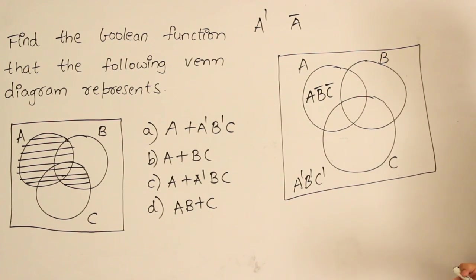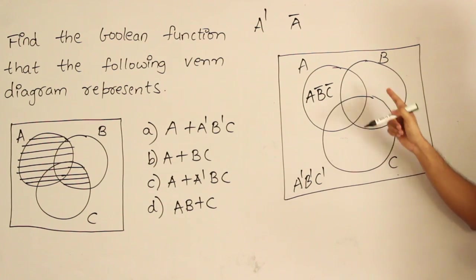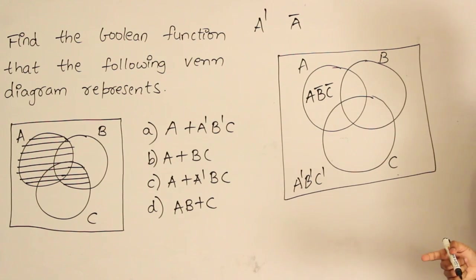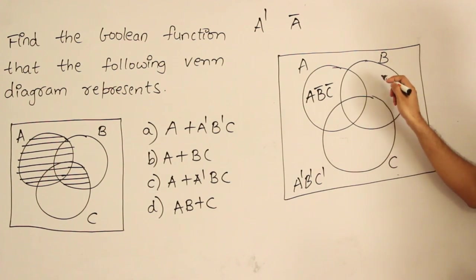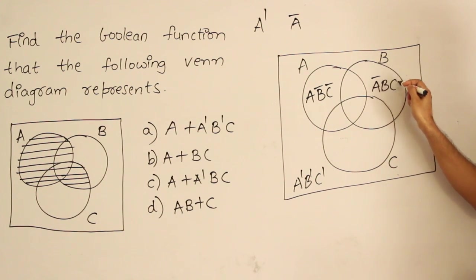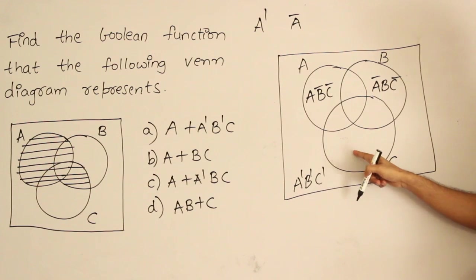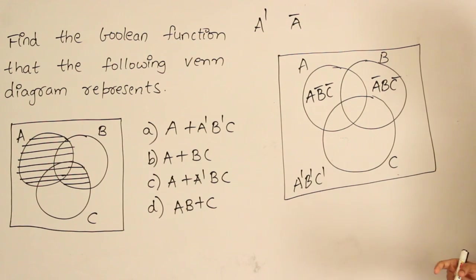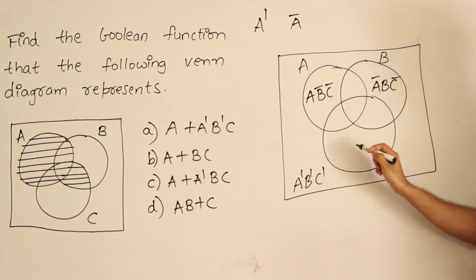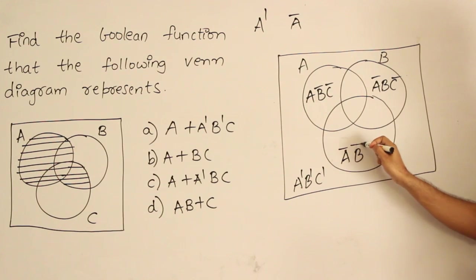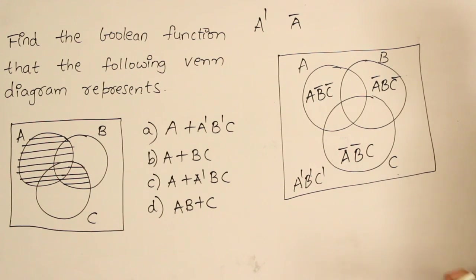Where B is present but A and C are not, that is A prime, B, C prime. Where C is present but A and B are not, that is A prime, B prime, C.